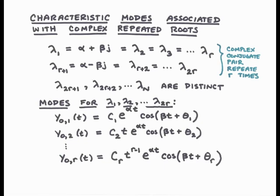The difference between the various modes has to do with the powers of t associated with each — from t to the zero through t to the r minus 1. They also differ in their coefficients c sub i and angles theta sub i. Of course, these are determined by the initial conditions of the problem.